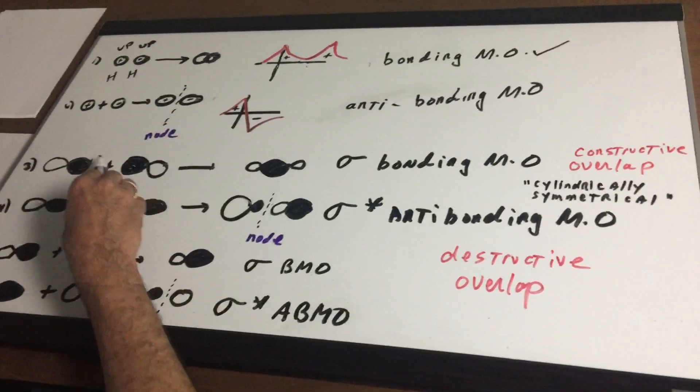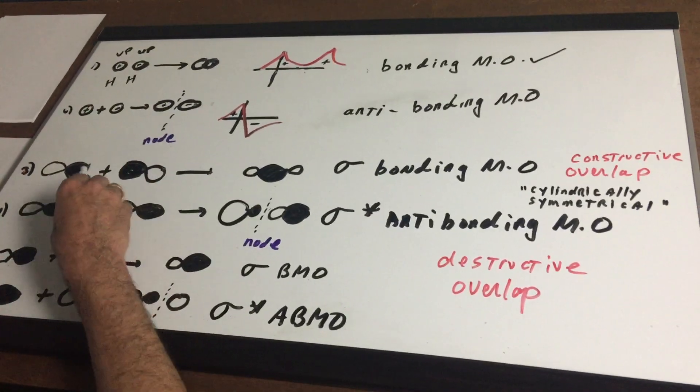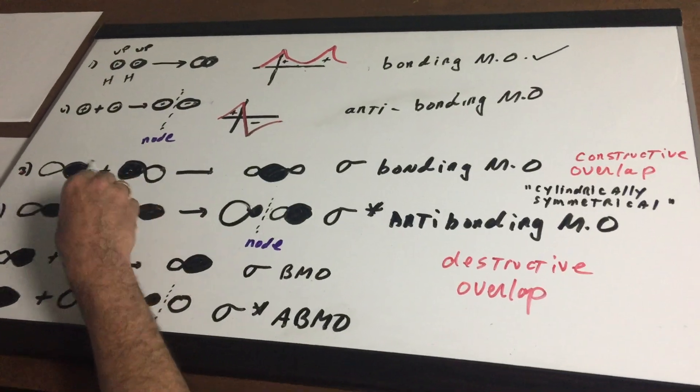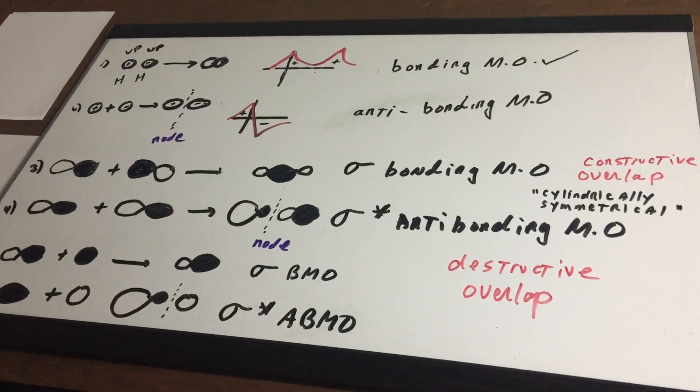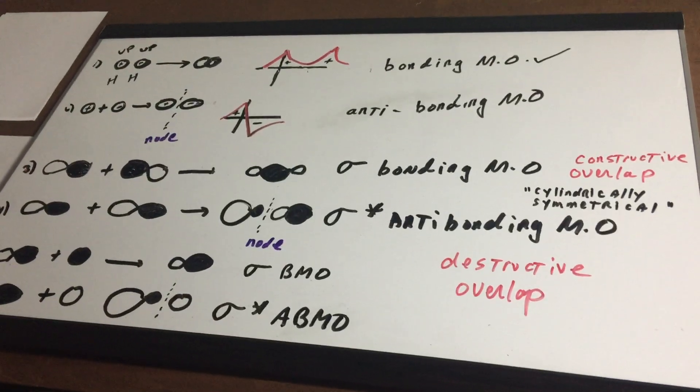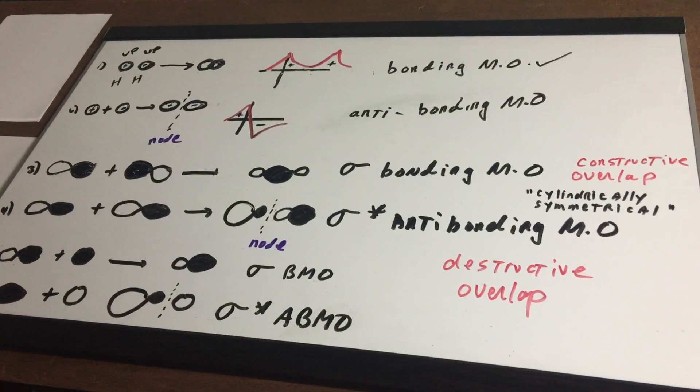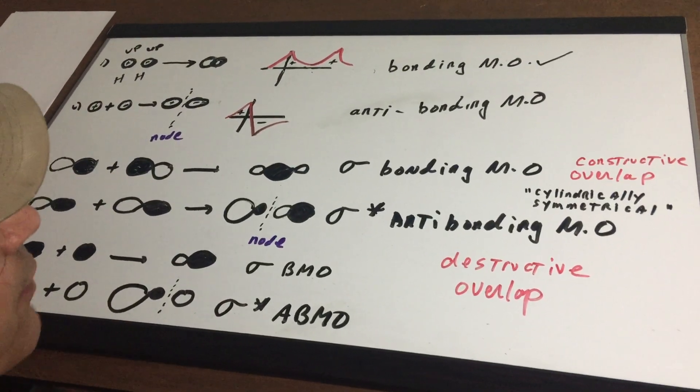When the two waves meet each other, which I'm going to use different colors now. When the two same colors meet each other that's what we call a bonding molecular orbital overlap and that's what we call constructive overlap.